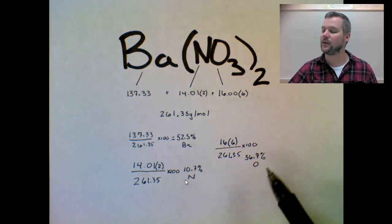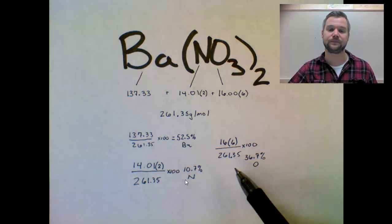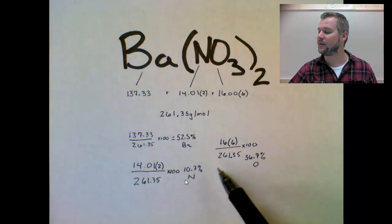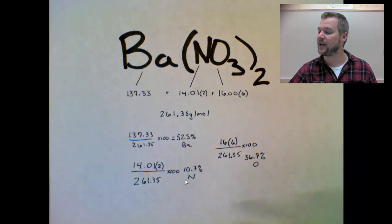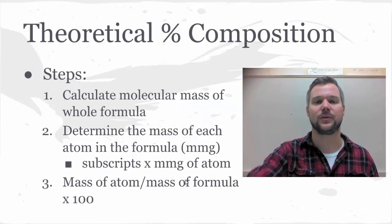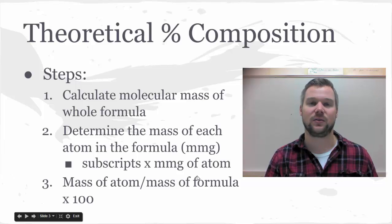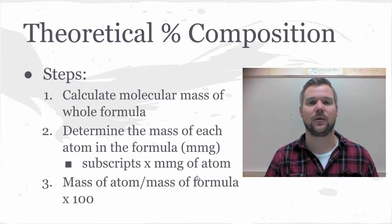If you did this right, these percentages should add up to 100% or very close to it. If you do it for this problem, they're going to end up just a little bit shy, but that's okay as long as it's within a reasonable amount. 0.1 or 0.2 would be acceptable. So that was theoretical percent, because we don't actually have a sample of chemical, and so that's the amount in theory that we would expect.